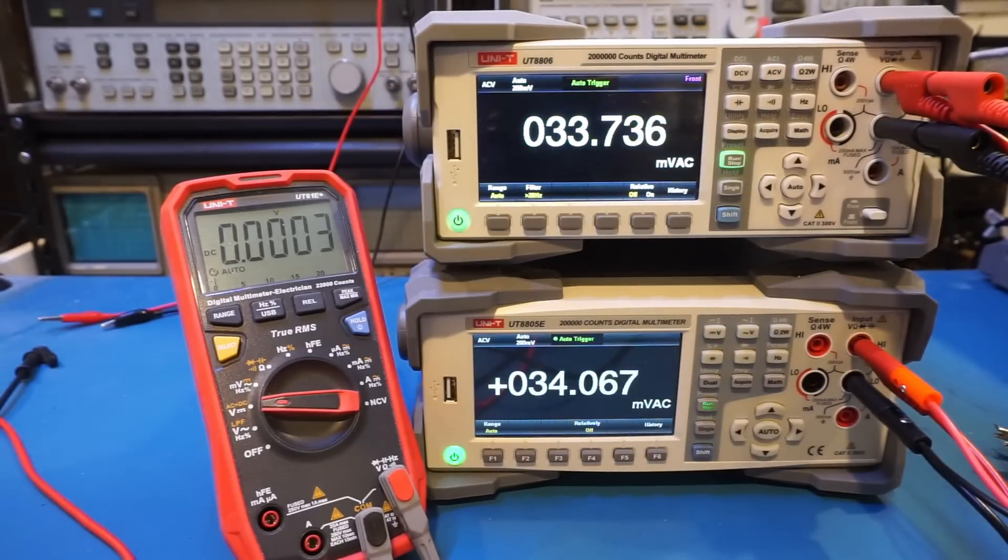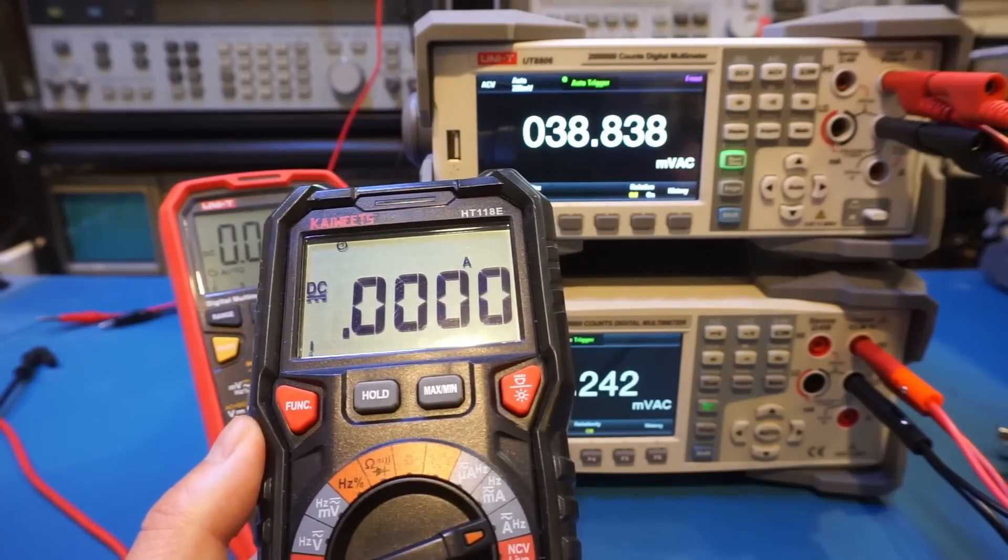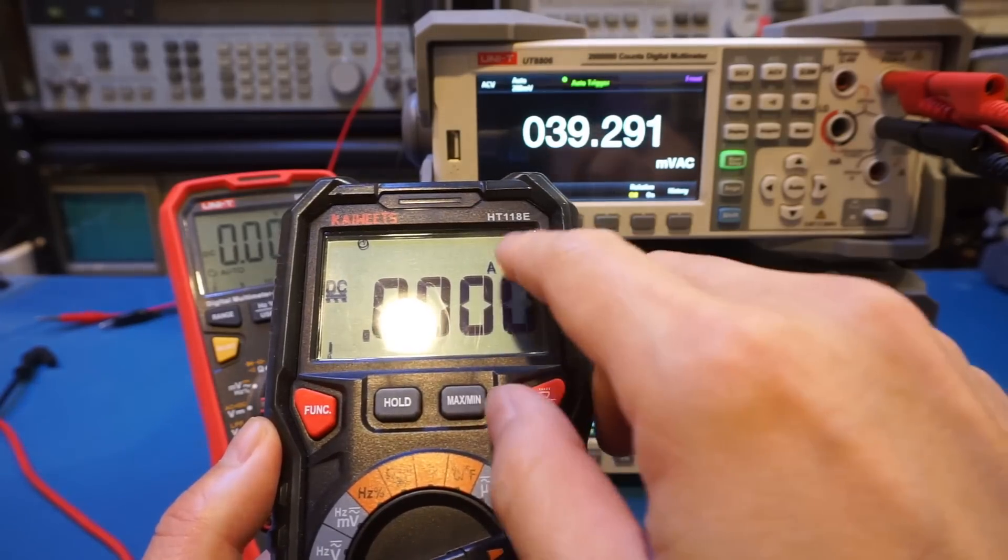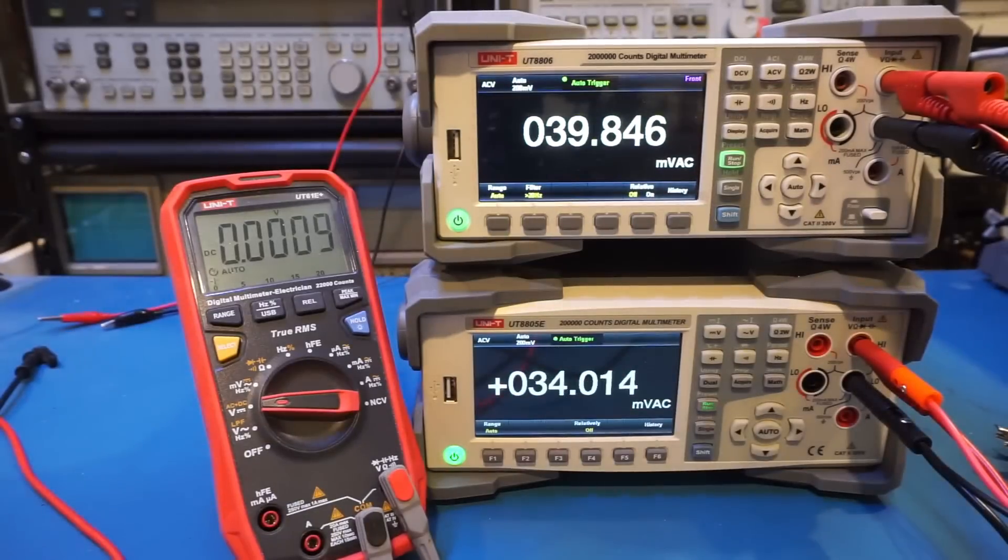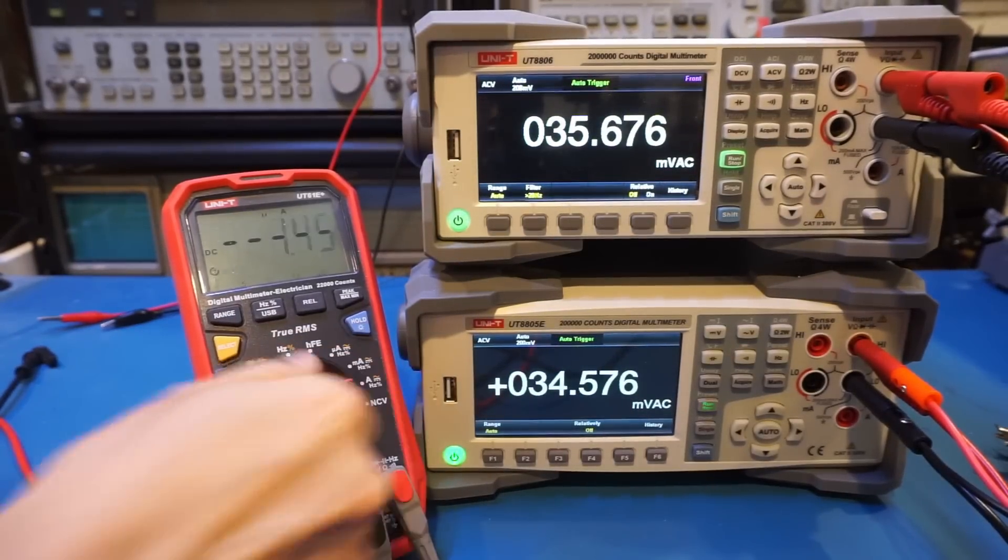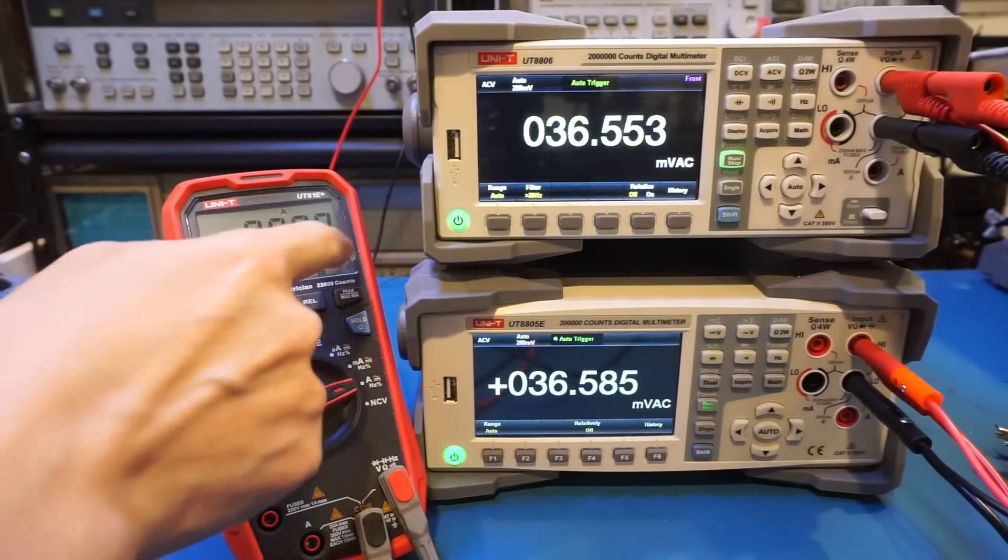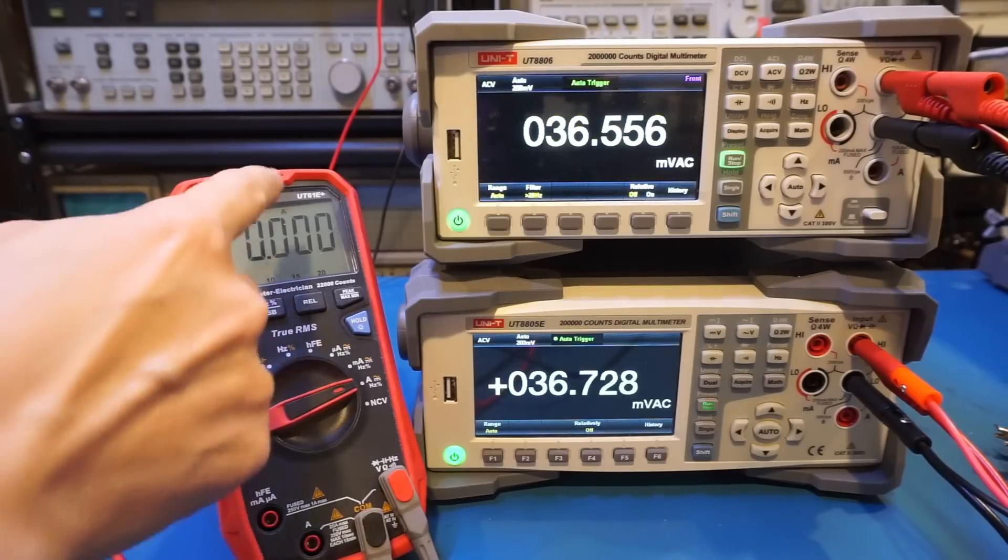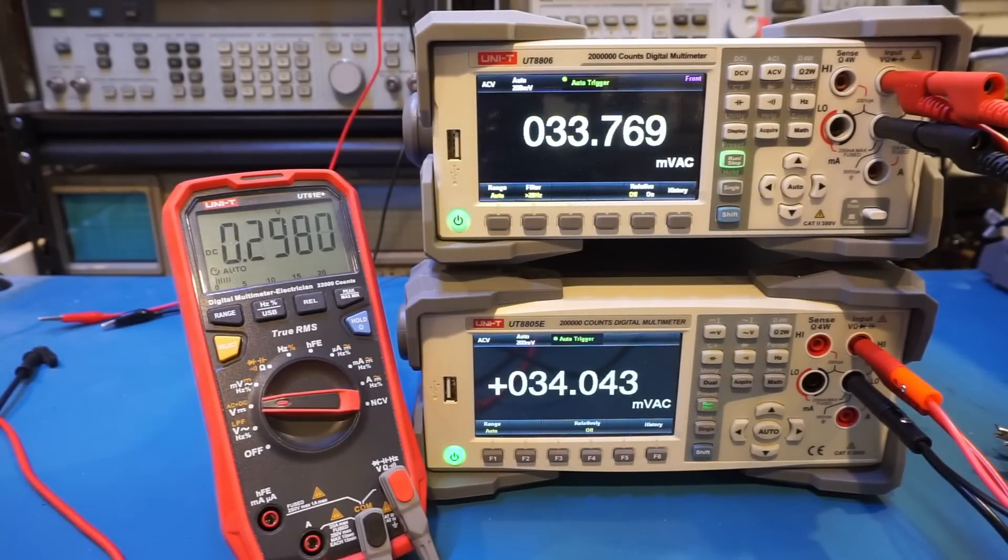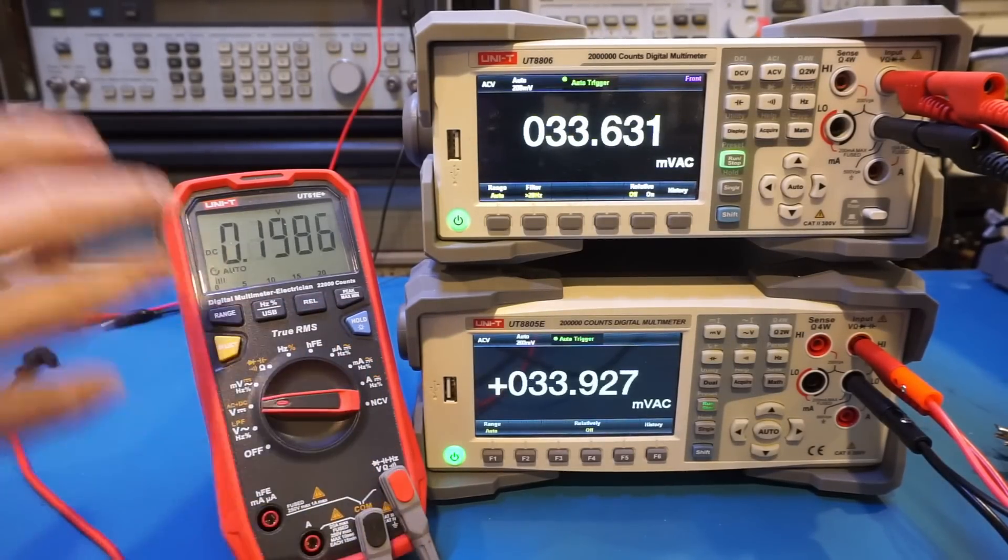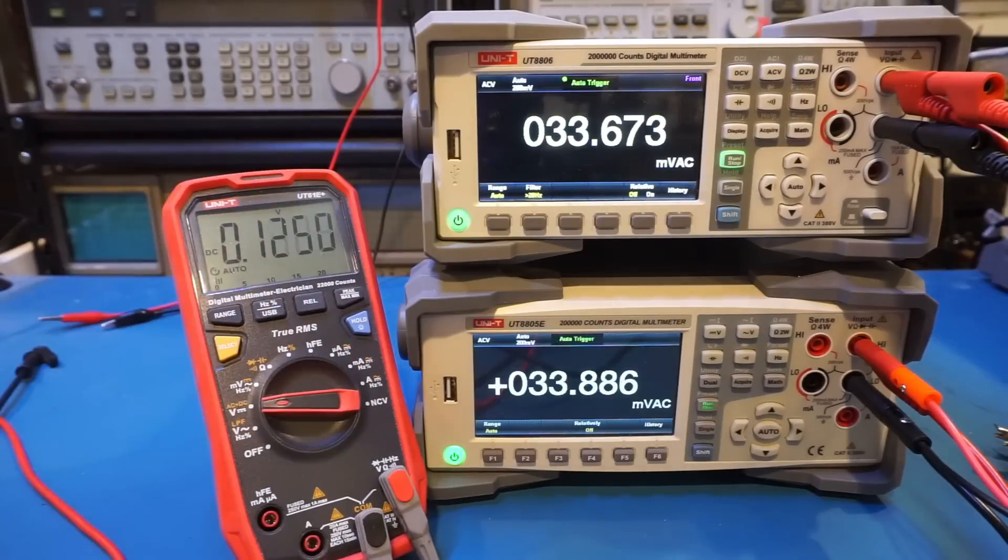And even the meters with the same counts don't necessarily have the same resolution. For instance, in amps range, the Keysight HT118E has a 0.1 milliamp resolution. You can see one, two, three, four, four digits after the decimal. Whereas on the UniT, you can see here, we only have three digits after the decimal. So the resolution here is 1 milliamp. So although they're both 4.5 digit meters and the UniT UT618 plus actually has higher counts than the HT118E, the resolution in the current range actually is lower than HT118E.